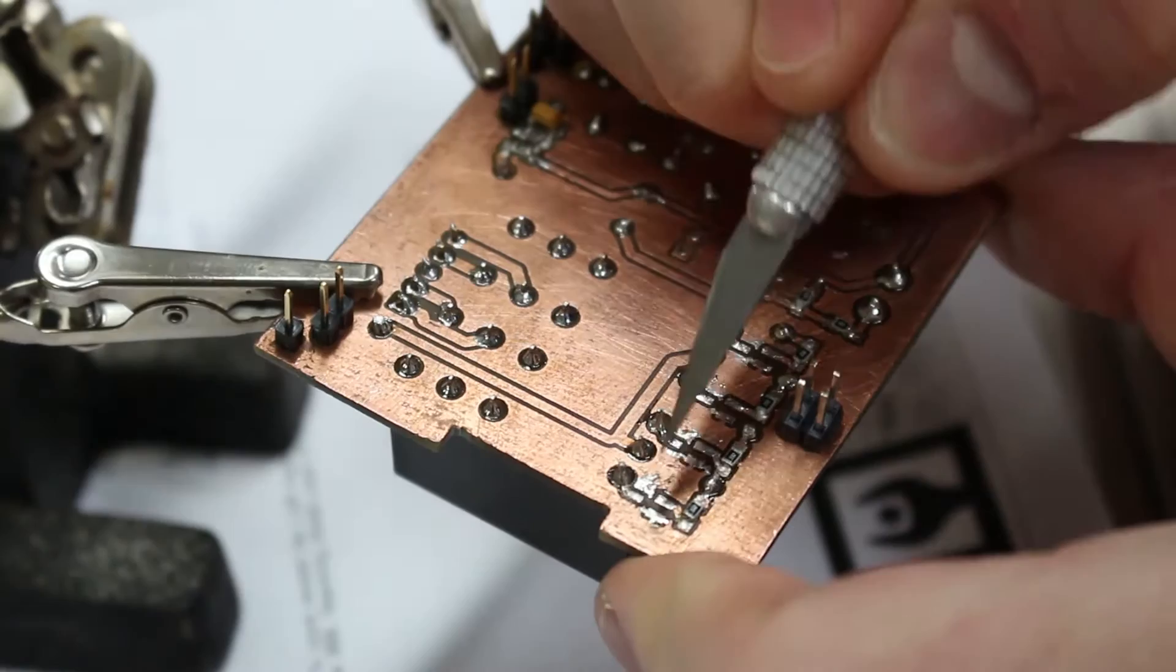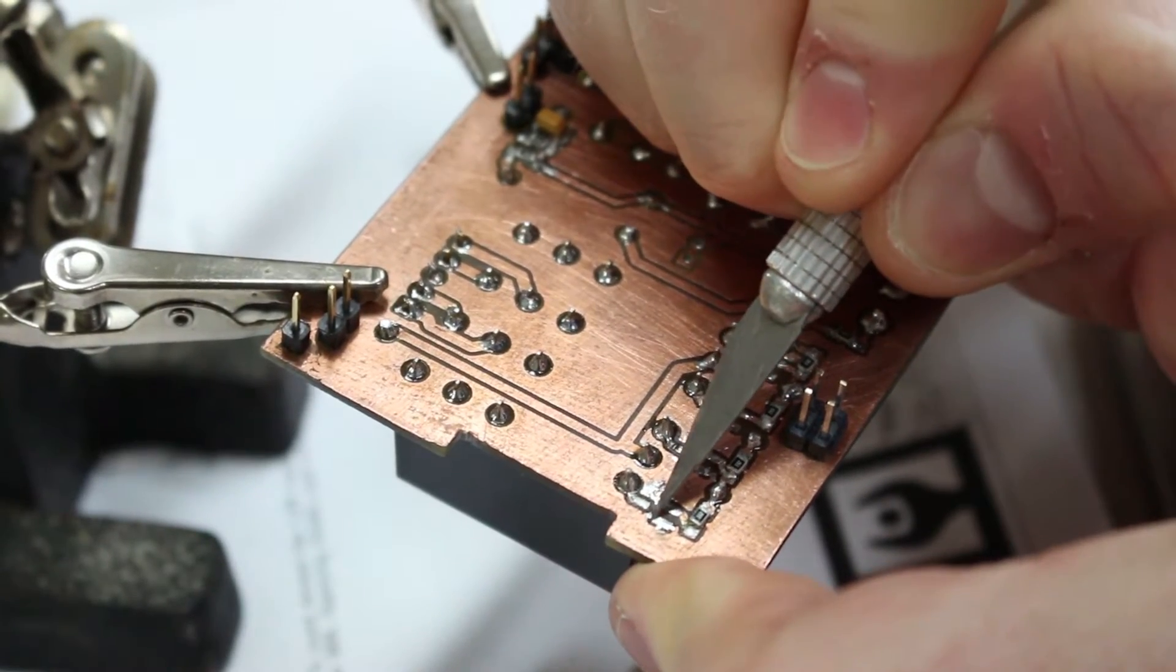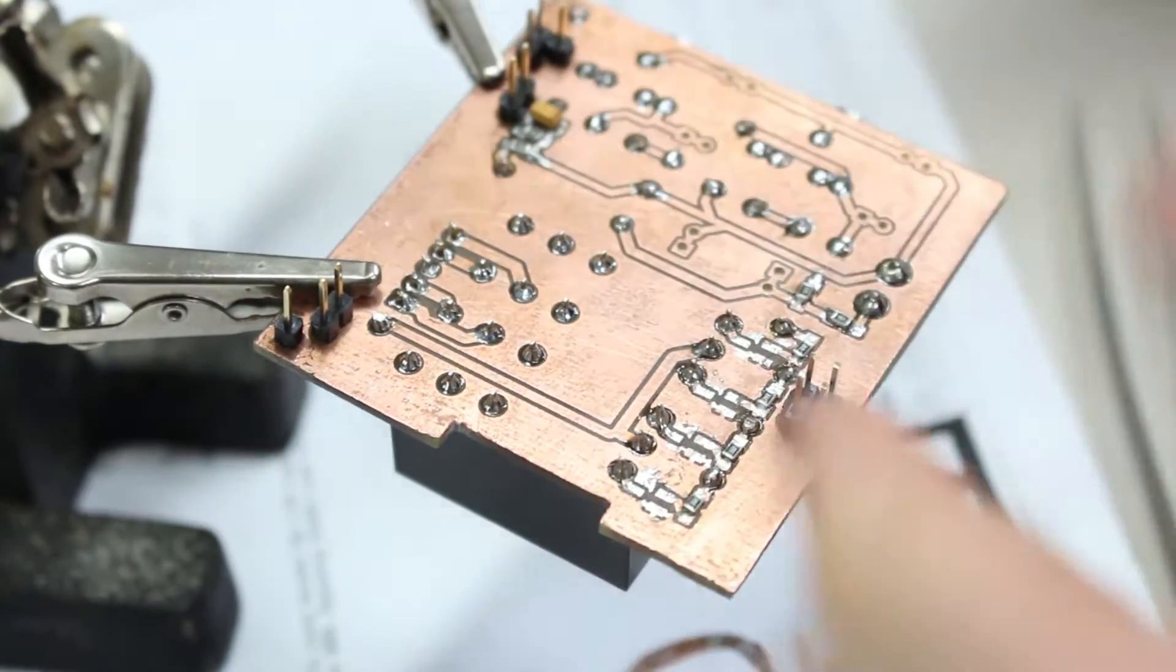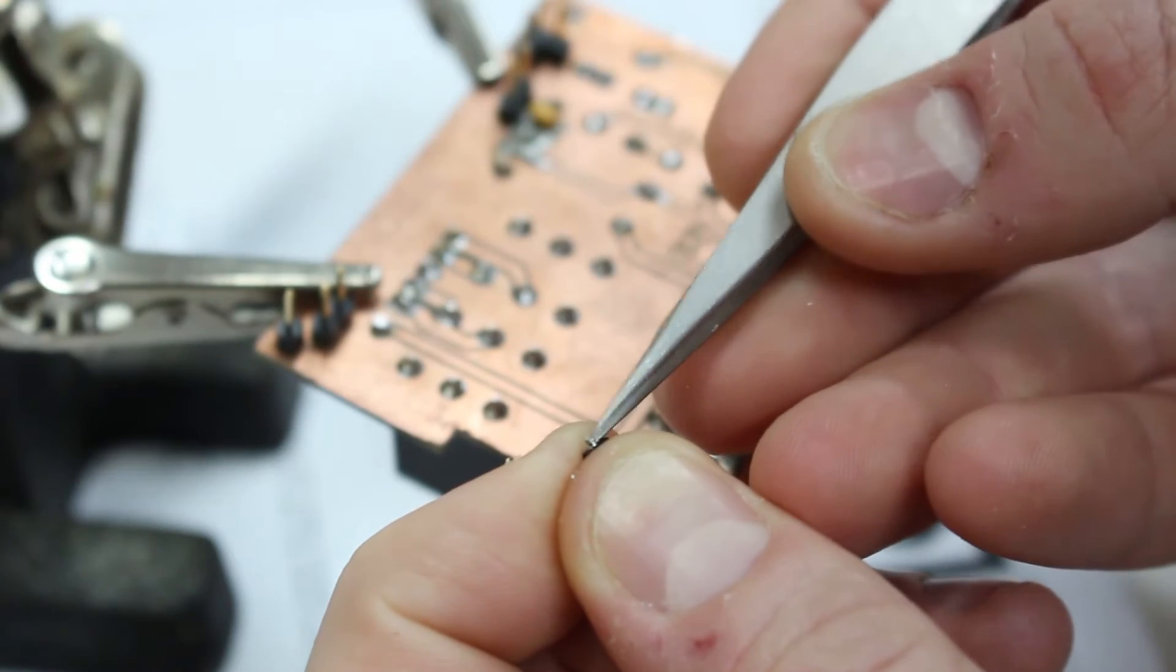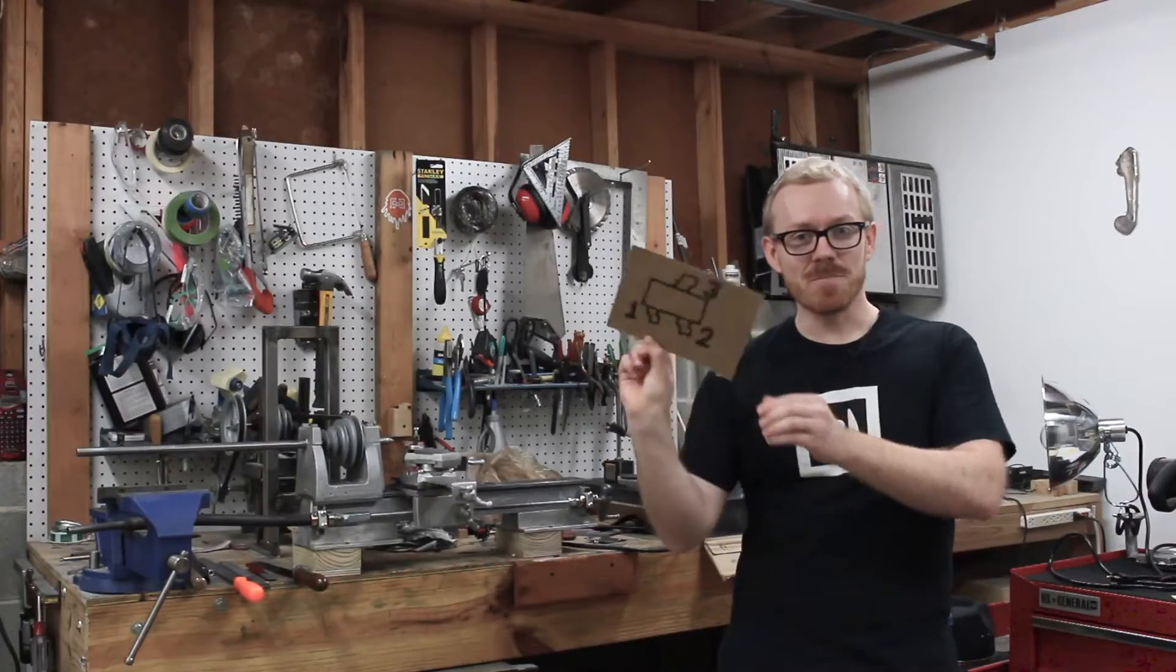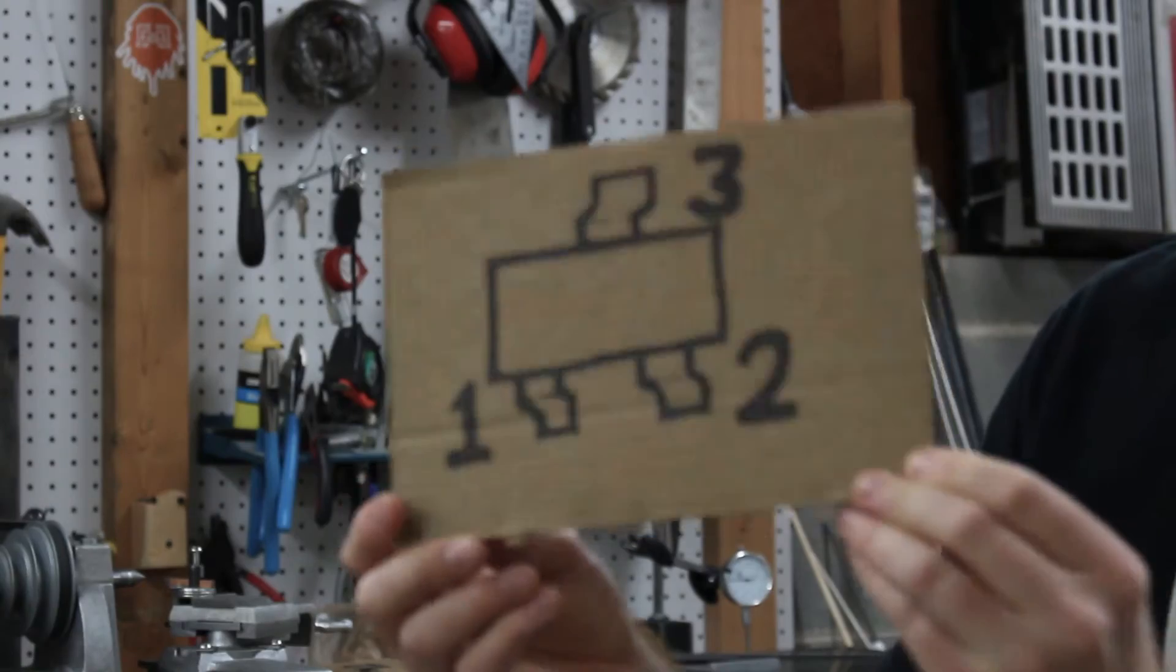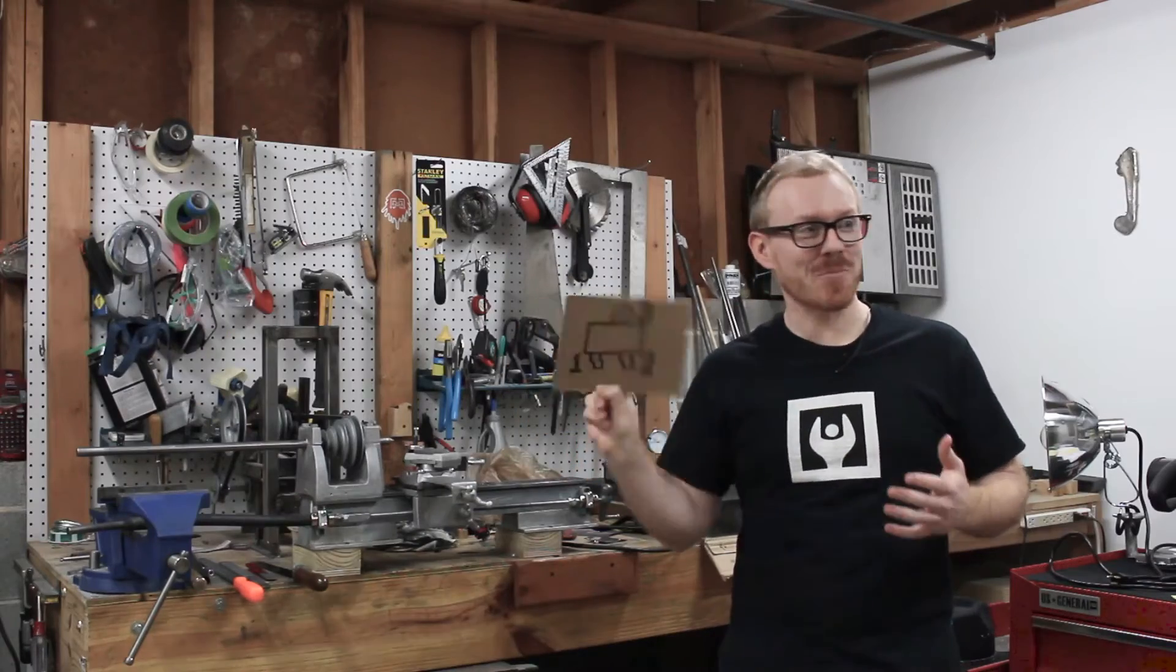I initially started out by trying to use a utility knife to change the actual copper traces on the board. But then I had an epiphany. The epiphany was that I could flip the part over. And that fixes the mirroring problem. You just flip the part over.